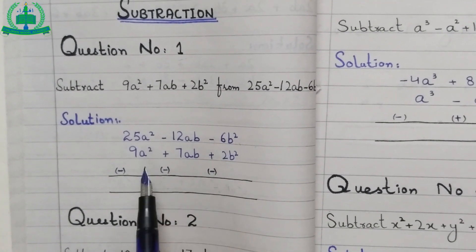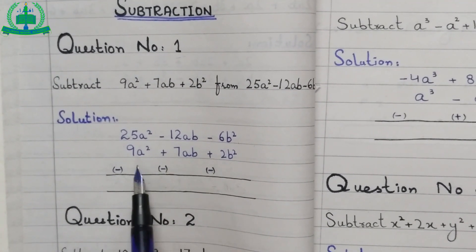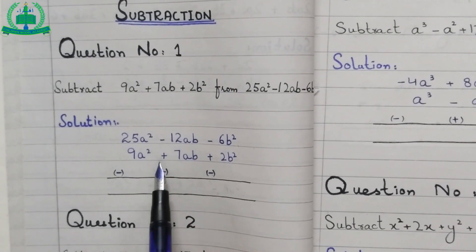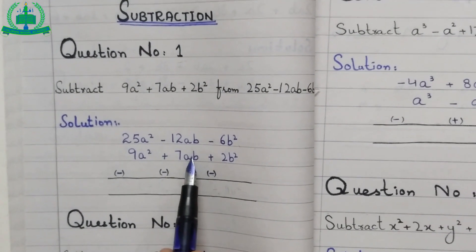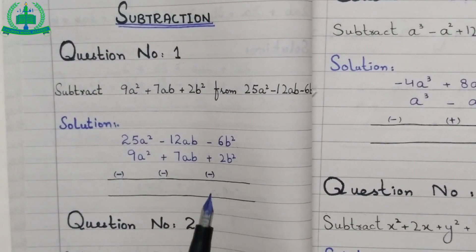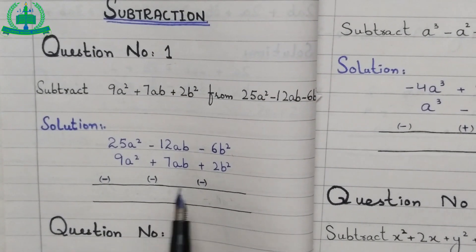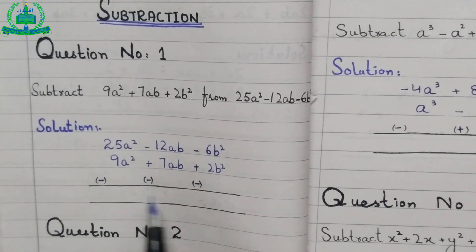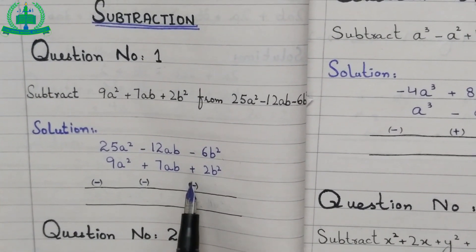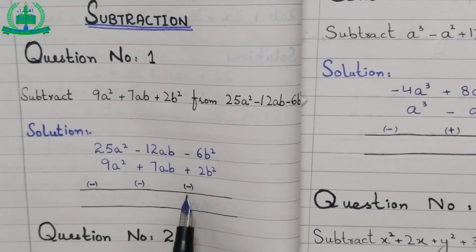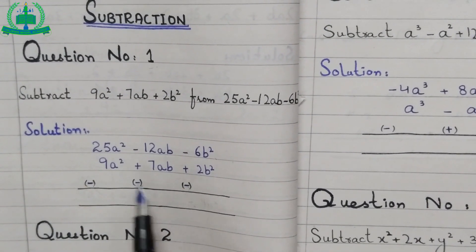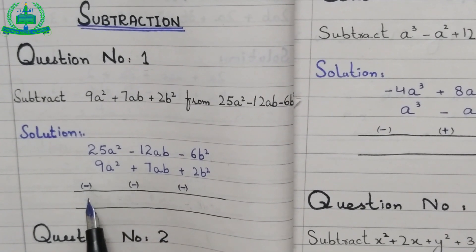Then we arrange the second term like the first term: 9a square plus 7ab plus 2b square. In subtraction, we need to change the signs of the second equation: plus changes into minus, plus changes into minus, plus changes into minus.